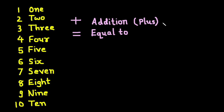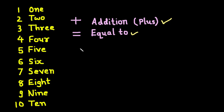We also learnt about these two signs: plus, which is the sign of addition, and equal to. To add a number to another number, we will use this symbol — the sign of addition, or we can say the plus sign. Let us do one activity.